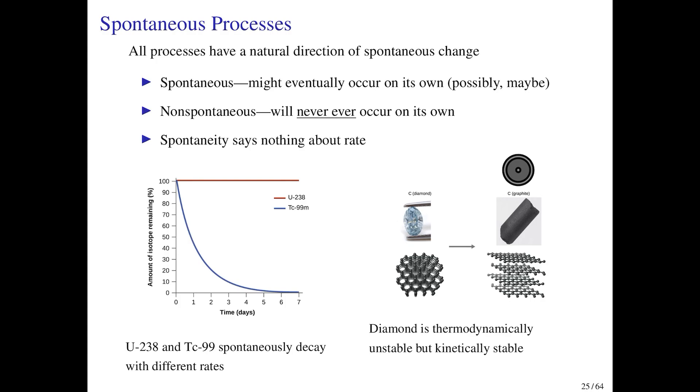It turns out that in terms of thermodynamics, at least, graphite is the more stable form of carbon. From this perspective, from the perspective of spontaneity, we would say that carbon spontaneously becomes graphite. However, as we know from experience, diamonds do not suddenly turn into graphite as we're looking at them. Diamonds, in fact, are very stable.